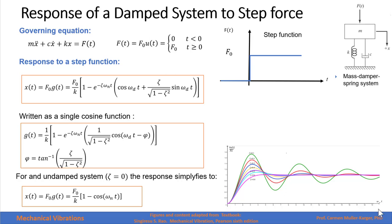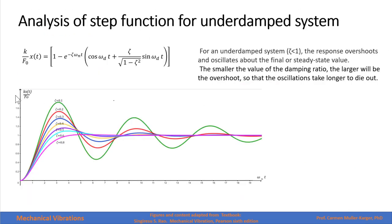Graphically, the response looks like this for several values of zeta. These graphs show the unitary response, so the value as time goes to infinity approaches 1. This value will be f sub 0 over k, which is the static displacement. For an undamped system, the response overshoots and oscillates about the steady state value. The smaller the damping ratio, the larger the overshoot, and the oscillations take longer to die out. For values of zeta greater than 0.7, the system doesn't oscillate and has no overshoot.